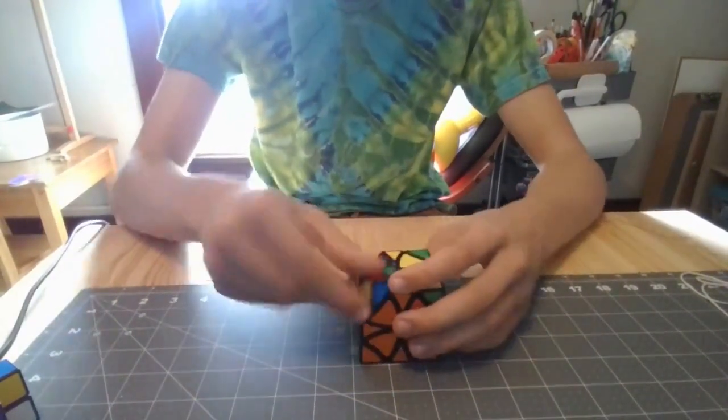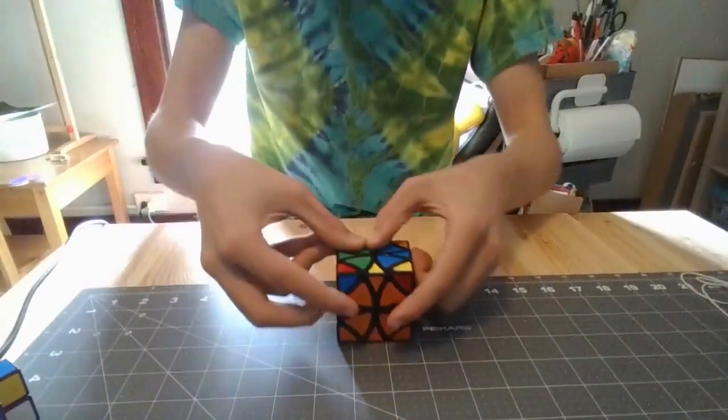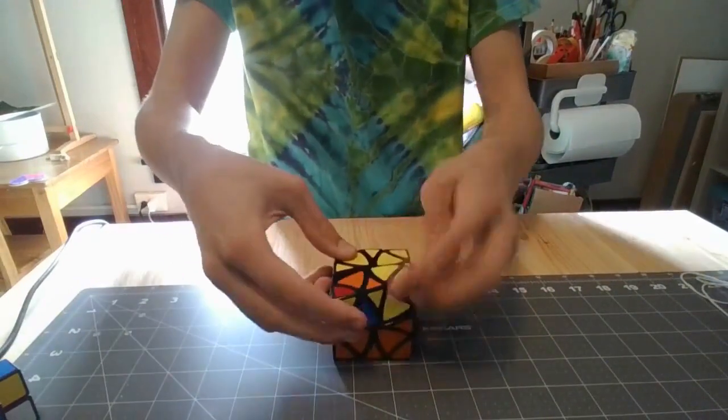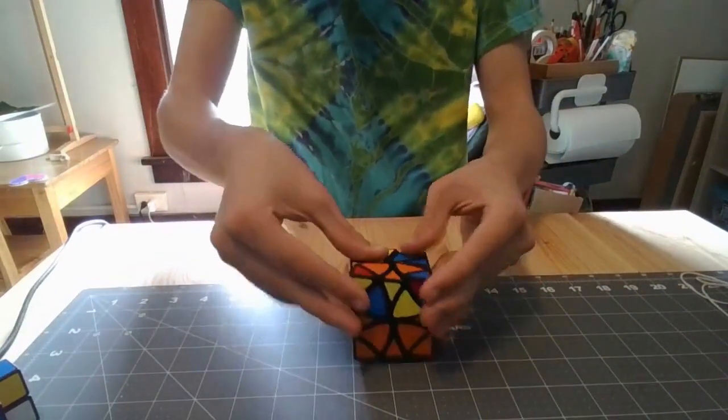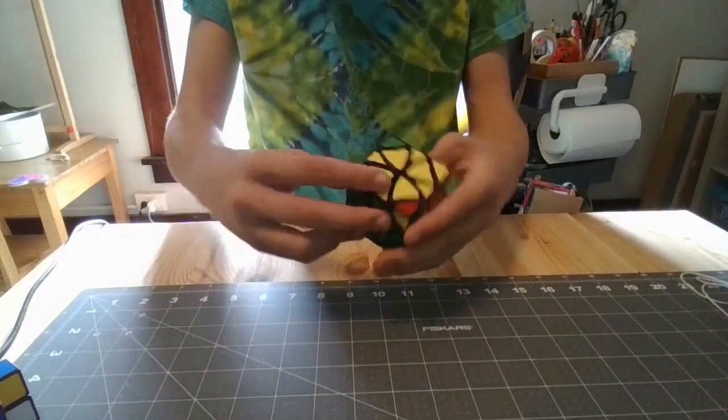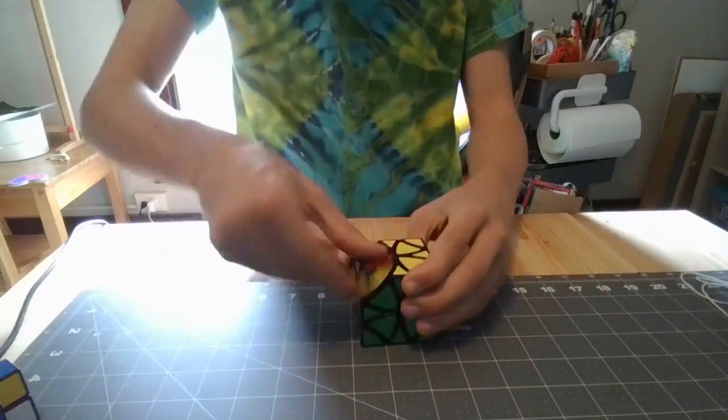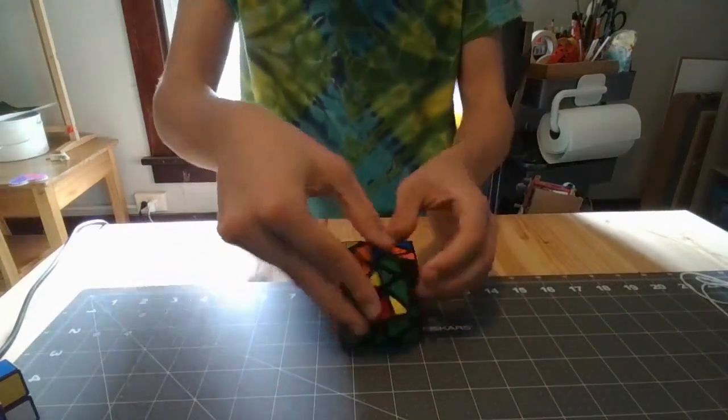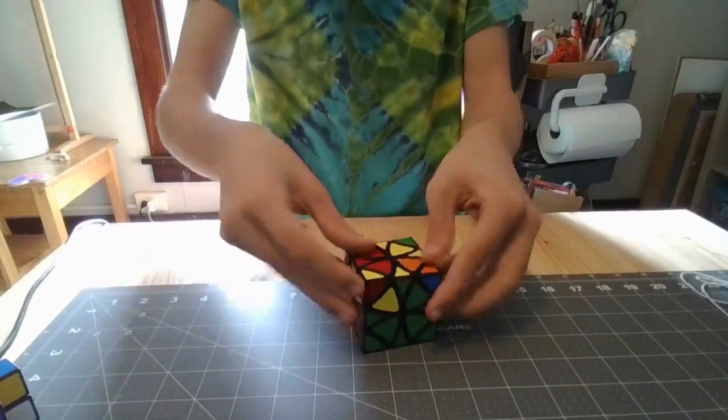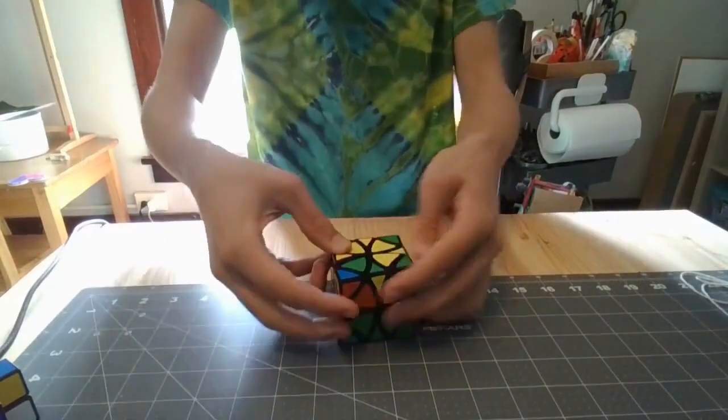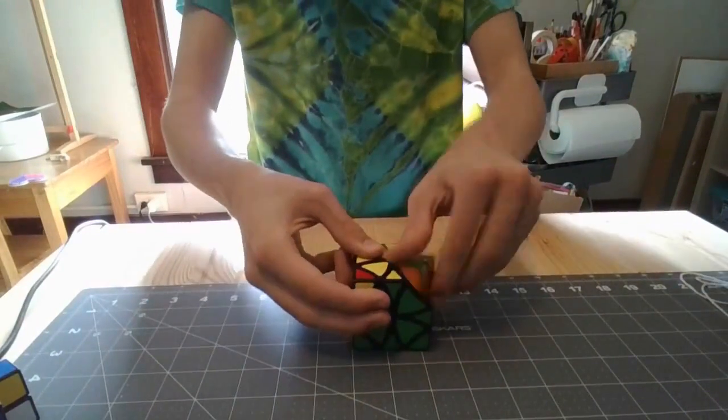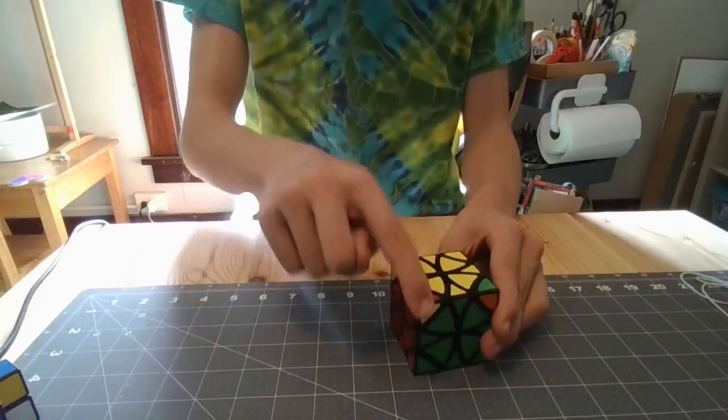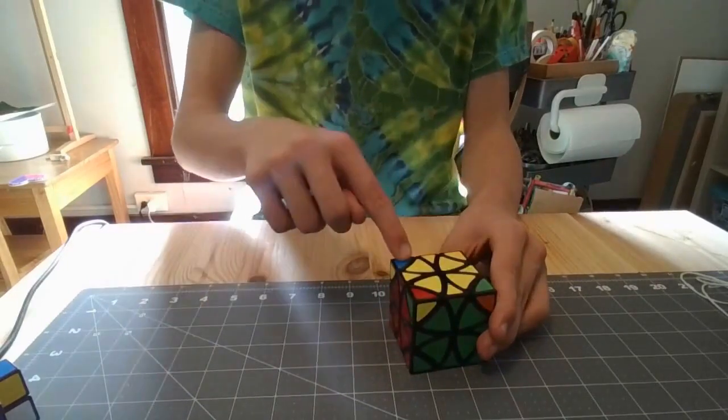And boom. Now we've got to do that one algorithm that you need to know. All right. And the algorithm is right, left, back, left, back, right, back, left, back, and left. And that switches these pieces. It makes this one go here, this one go here, and this one come back to here.